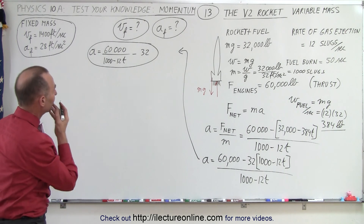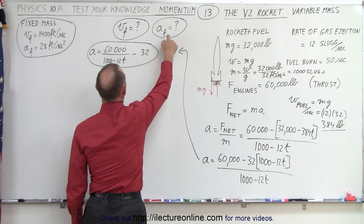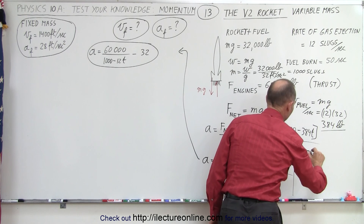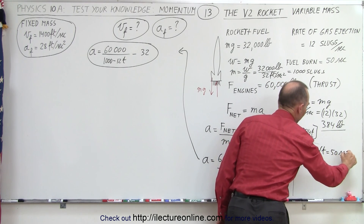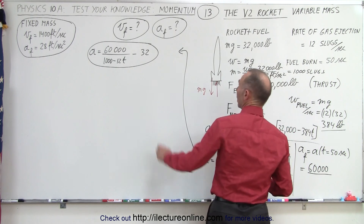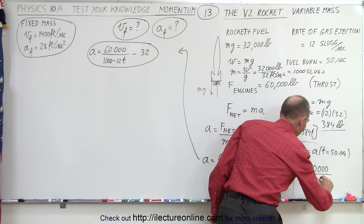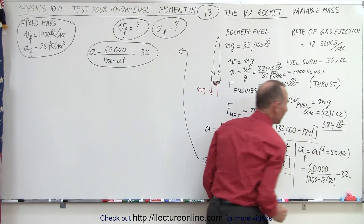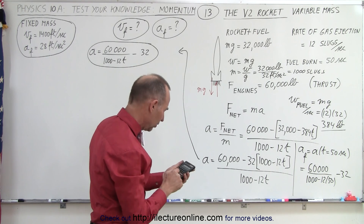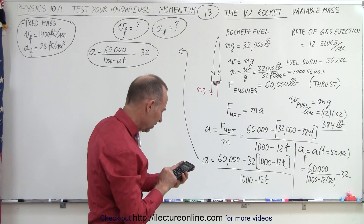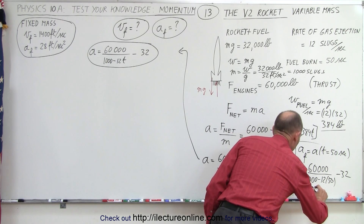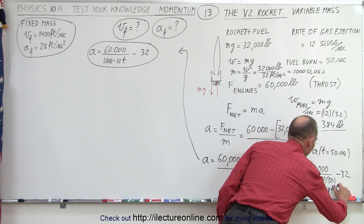Now we can calculate the final acceleration. Acceleration final equals acceleration at T equals 50 seconds. Plugging in 50: that's 60,000 divided by (1,000 minus 12 times 50). 12 times 50 is 600, so the denominator is 400. That gives 60,000 divided by 400, which is 150, minus 32, which equals 118 feet per second squared.